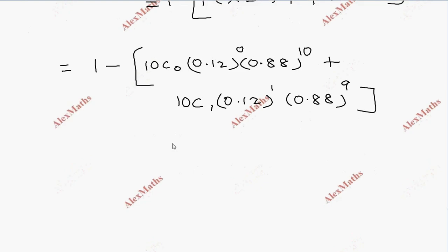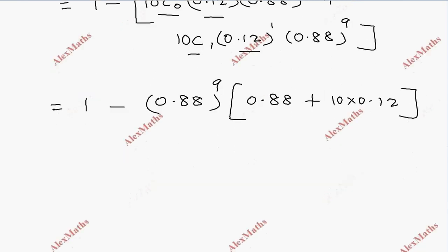This is 0.88 whole power 9. This can be taken common. So 1 minus 0.88 whole power 9, bracket 0.88 plus 10 times 0.12.